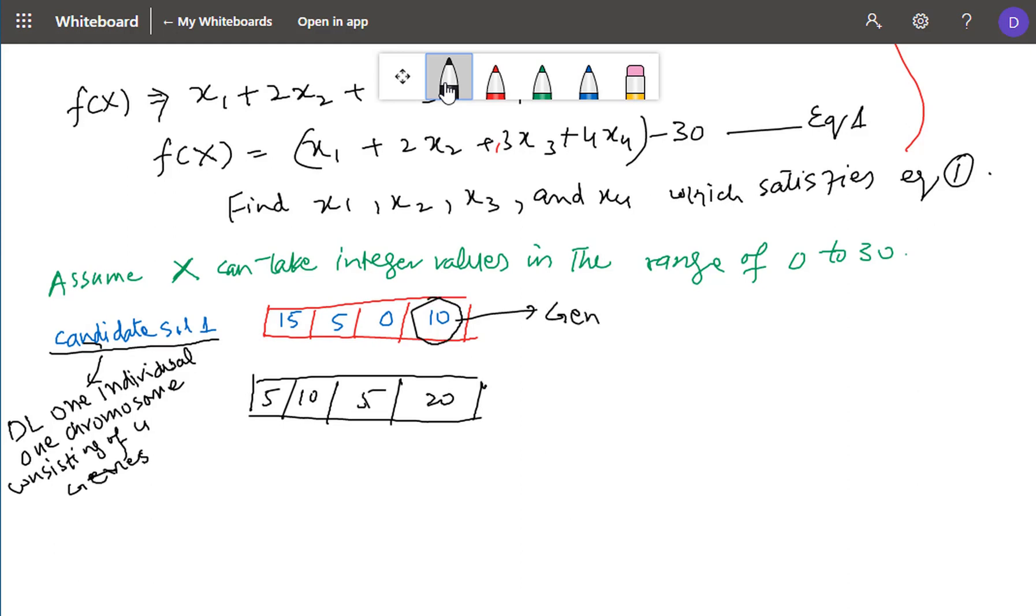And each chromosome consists of a list of genes, here four genes. Further, the set of all chromosomes constitute the population or set of potential solutions.